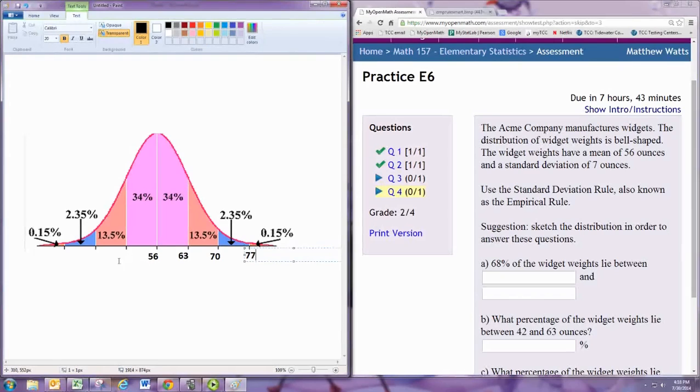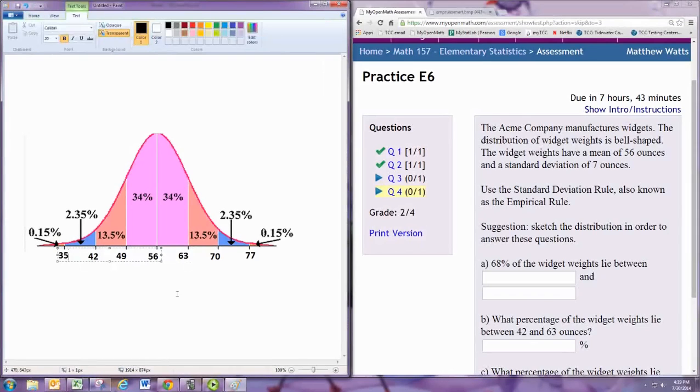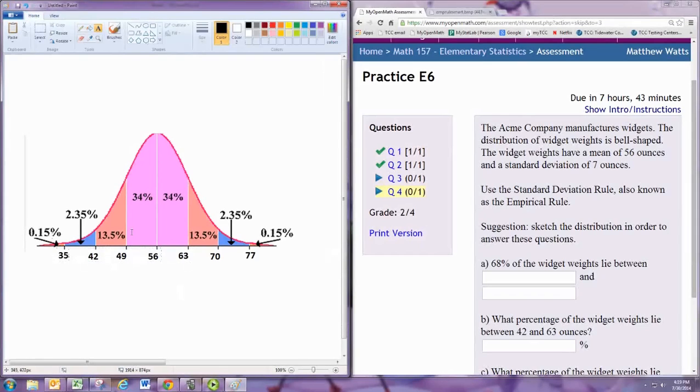we subtract one and get to 49, subtract another one and get to 42, subtract another one and get to 35. So we now have the empirical rule set up for this problem.